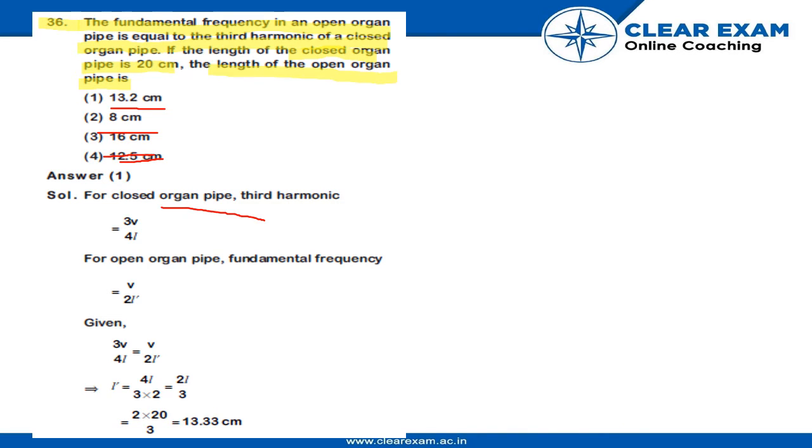For a closed organ pipe, the third harmonic is equal to 3v/4l. For an open organ pipe, the fundamental frequency is v/2l. So given 3v/4l equals v/2l'.